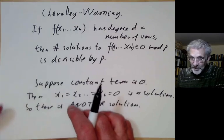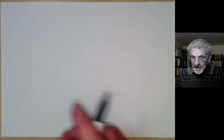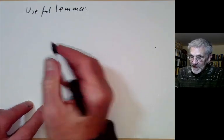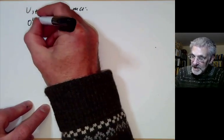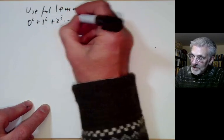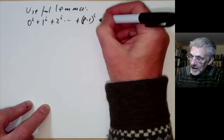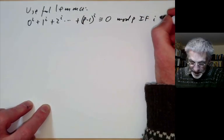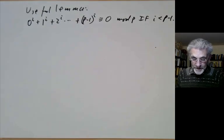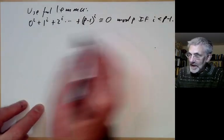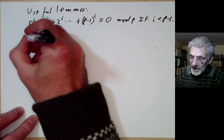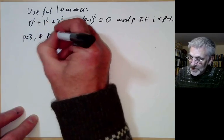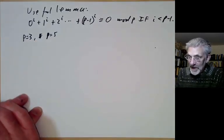Before proving the Chevalier-Warning theorem, we need a useful lemma. This lemma says what the sum of the ith powers of all the numbers up to p-1 is, and this is congruent to 0 mod p if i is less than p-1. Before proving this, let's work out a couple of cases so you can see what's going on. Always a good idea to work out a few small cases just to check you haven't made some sort of dumb error.